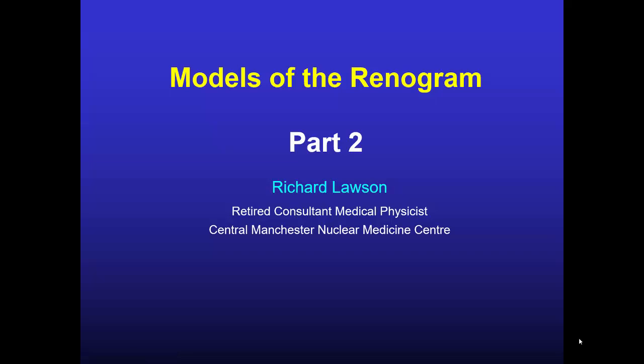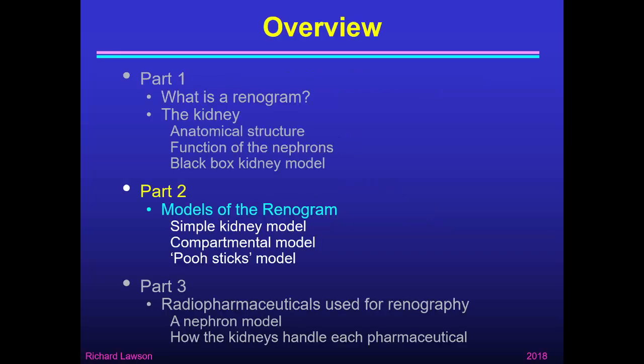This is the second part of my talk on models of the renogram. In the first part I explained what a renogram is and talked about the kidney, its anatomical structure, the function of the nephrons, and I showed you my black box model. In this second part I'm going to talk about three models of the renogram: a simple kidney model, a compartmental model, and a Pooh-sticks model.